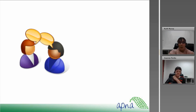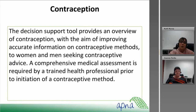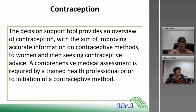The first section is contraception. The Decision Support Tool provides an overview of contraception with the aim of improving accurate information on contraceptive methods to women and men seeking contraceptive advice. A contraceptive medical assessment is required by a trained health professional — we're not saying everybody has to know all the facts. Unless you're a GP or nurse practitioner, you can't provide a prescription for contraceptive devices. But this tool will hopefully open doors so you can engage patients with ideas about contraception options that might suit them, since many patients may have no ideas about the different alternatives available.